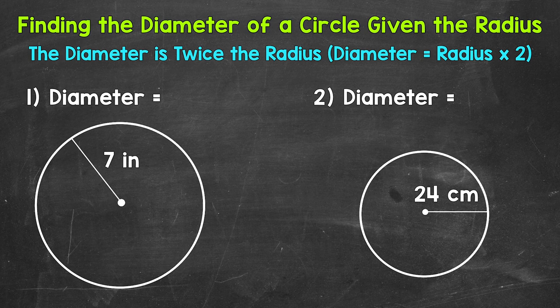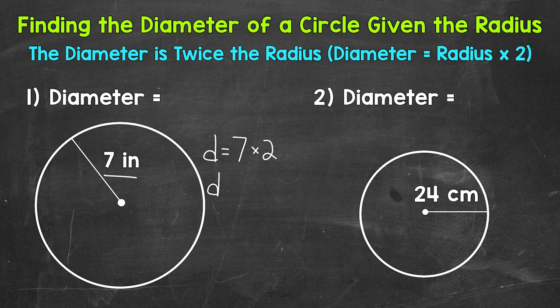Let's jump into our examples, starting with number one where we have a given radius of seven inches. So our diameter equals our given radius of seven inches times two. Seven times two is 14, so our diameter is going to be 14 inches.